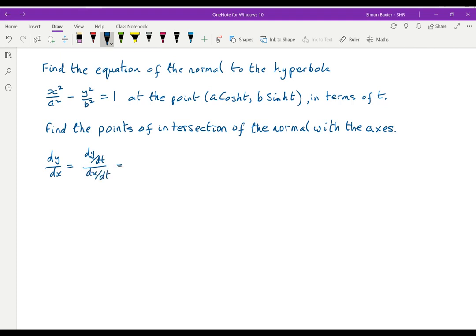dy/dt, differentiating sinh I get cosh, so I have b cosh t divided by, differentiating cosh I get sinh, so dx/dt is a sinh t.